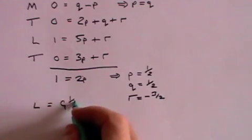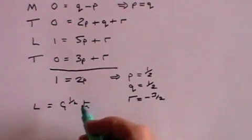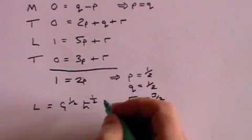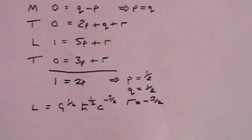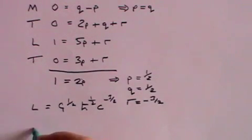And so we can now say that the fundamental length equals g to the power half times h bar to the power half times c to the power minus 3 halves.